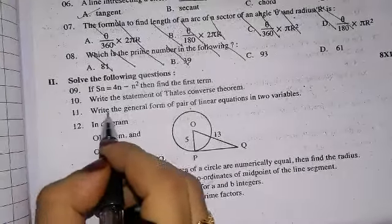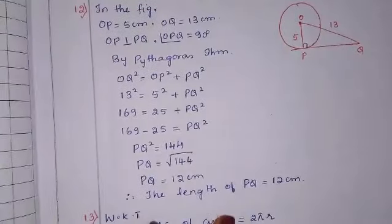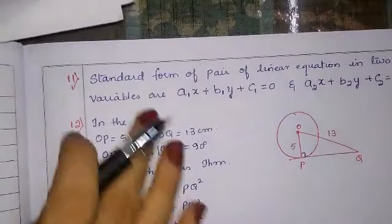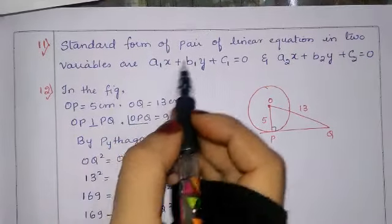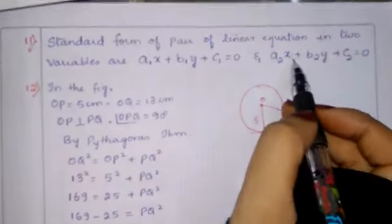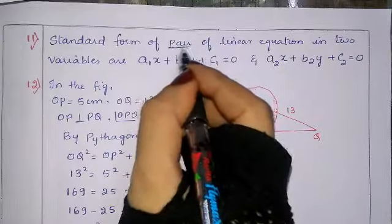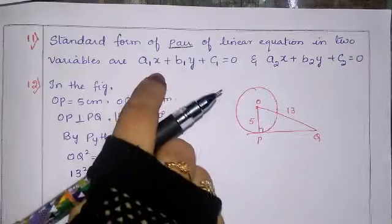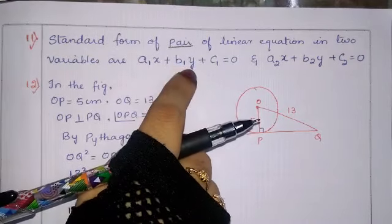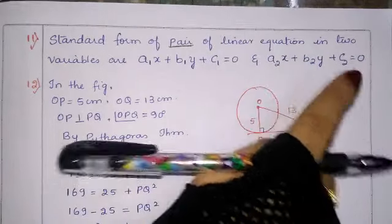Question number 11: write the general form of a pair of linear equations in two variables. The standard form is: A1x + B1y + C1 = 0 and A2x + B2y + C2 = 0. There are two equations because they said 'pair' of linear equations.